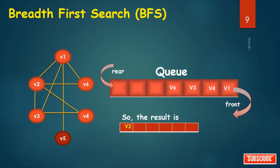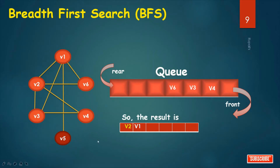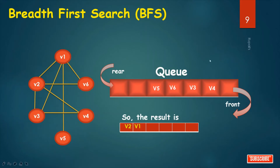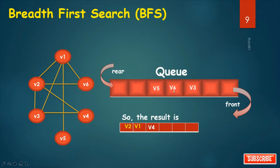Now it is time to remove. First, remove V1. The connected nodes of V1 are V2, V5, and V6. V2 is in status 3. V6 is in status 2. Only V5 is in status 1, so I insert V5 into the queue. Then remove V4 and check the connected nodes: V2 and V3. V2 is in status 3 and V3 is in status 2, so no node to be inserted.